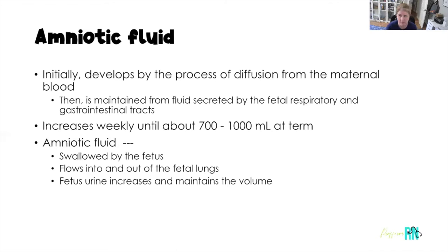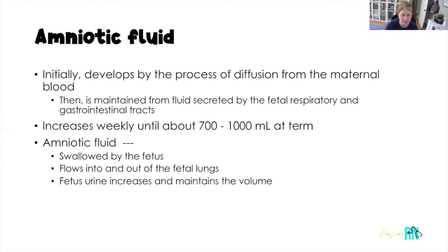Average amniotic fluid is about 700 to 1,000 milliliters at term. The baby swallows it and urinates it out — both essential to maintain volume. Amniotic fluid also flows in and out of the fetal lungs. Fetal lungs are not used for gas exchange; oxygen comes from the maternal circulatory system into the fetal circulatory system, and carbon dioxide leaves baby's circulatory system back through the placenta for mom to excrete. So the fetal lungs are filled with fluid.